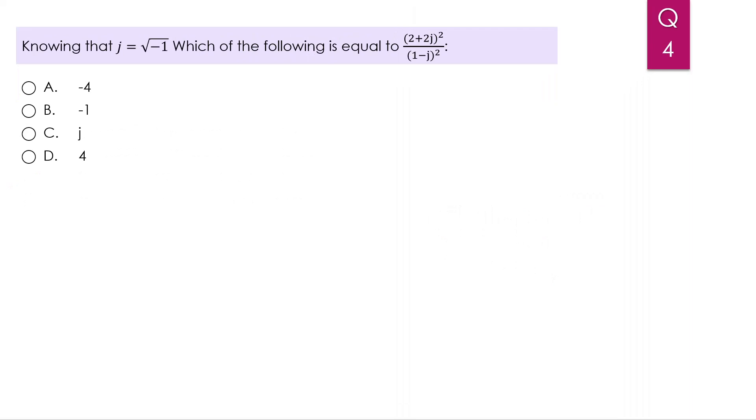The next one, knowing that j equals the square root of negative 1, which of the following is equal to (2 plus 2j) squared divided by (1 minus j) squared? Now, there is two ways to solve this expression.